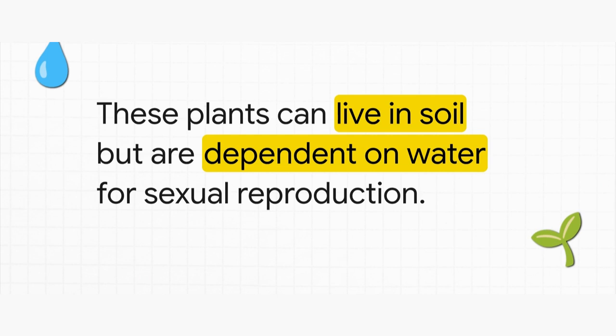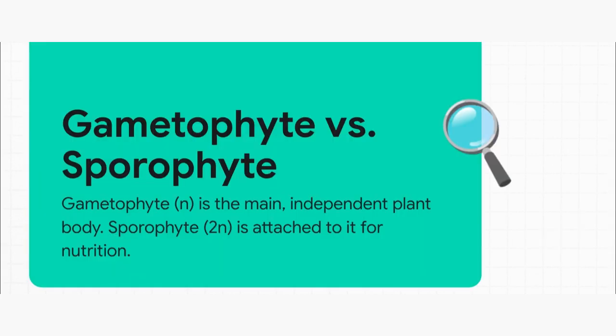Think about a frog — an amphibian. It lives on land, but it absolutely needs water to reproduce. Bryophytes are just like that. They live in the soil, on land, but — and this is the key — for fertilization to happen, they are completely dependent on water. Without water, there's just no reproduction. So just like algae, the main plant body here is also the gametophyte — the haploid N stage. It's the green part you see; it's photosynthetic and totally independent. But here's where it gets interesting: we now have a sporophyte, which is diploid or 2N. But this sporophyte isn't free-living — it stays attached to the gametophyte for all its nourishment. It's completely dependent. That's a huge point to remember.